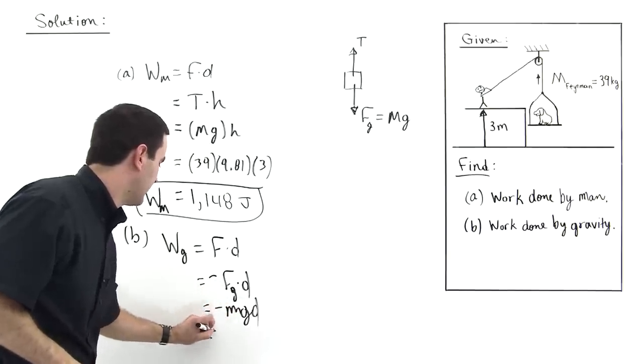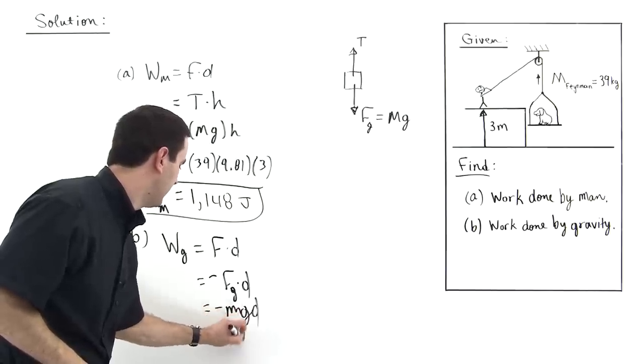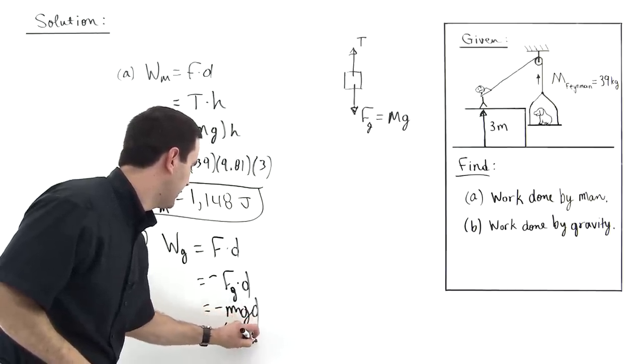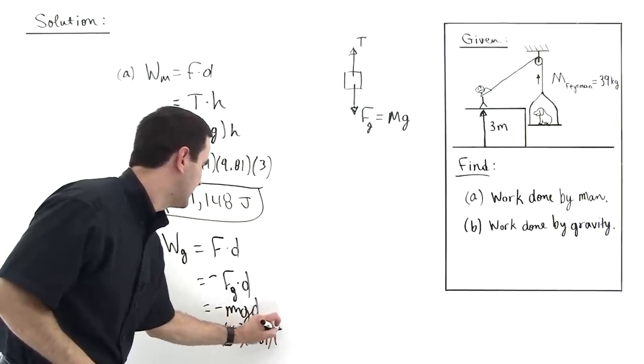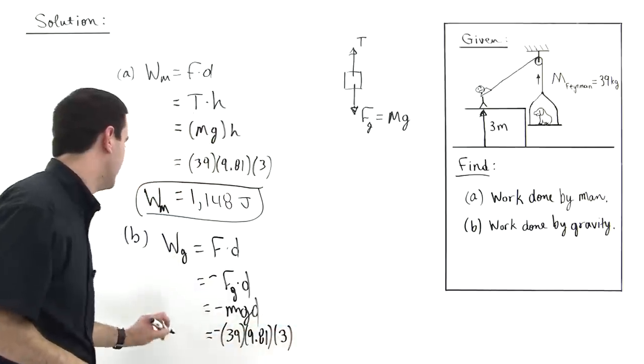So then Feynman has a mass of 39 kilograms, then 9.81 meters per second squared, and then the distance that he's pulled through is 3 meters like so.